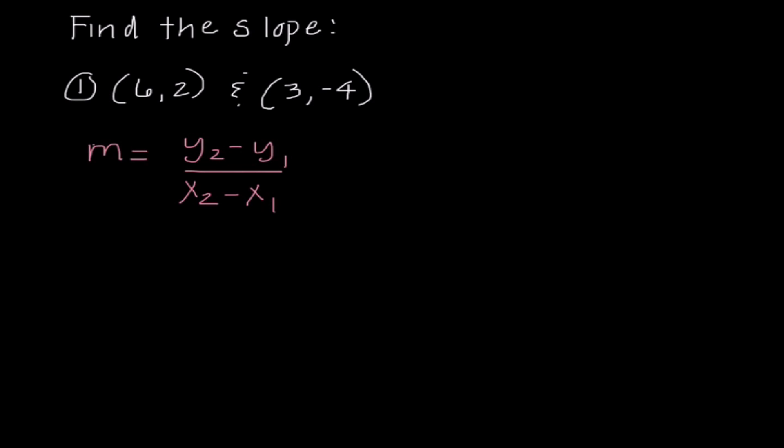Now, the key thing with this is it does not matter if I use this ordered pair as my first ordered pair or if I use this ordered pair as the first ordered pair. What does matter is if I decide that 6, and I'm going to label this x sub 1, if I decide that that's x sub 1, then y also has to be a sub 1. So I'm going to use the first ordered pair as 1 and our second one as 2.